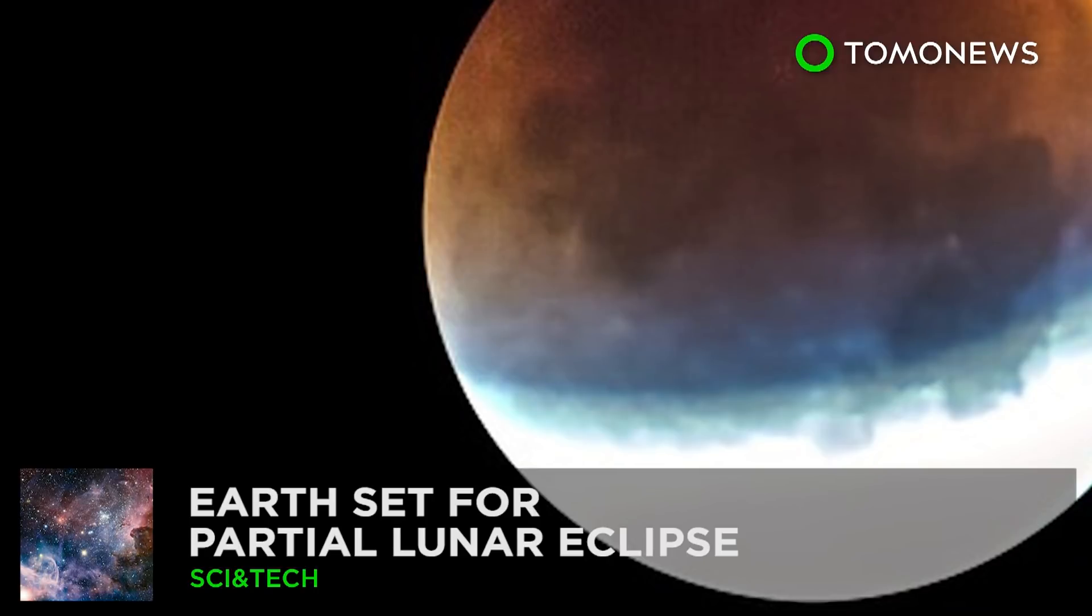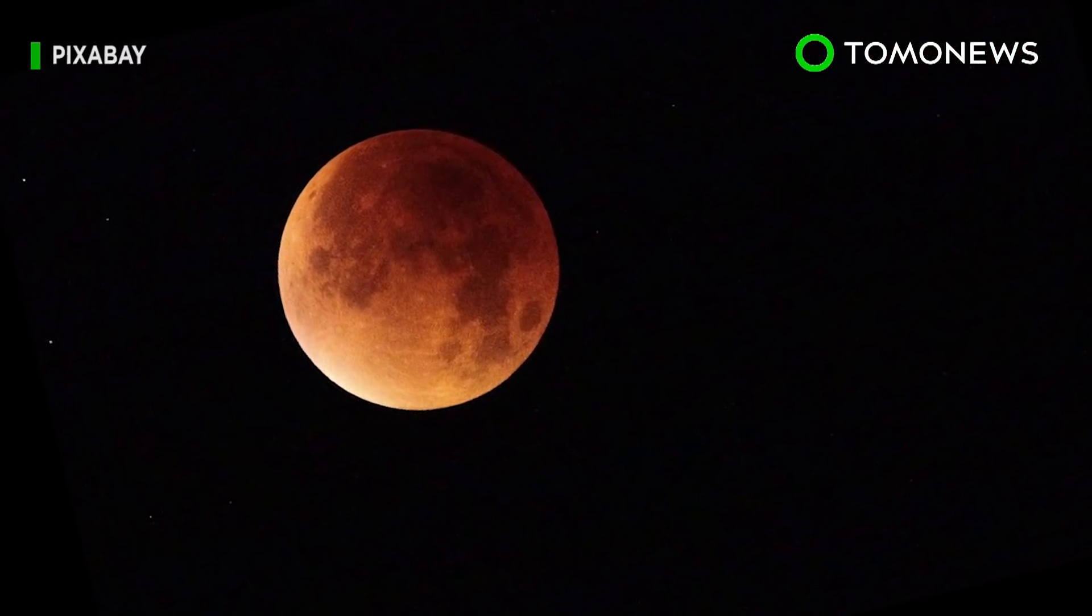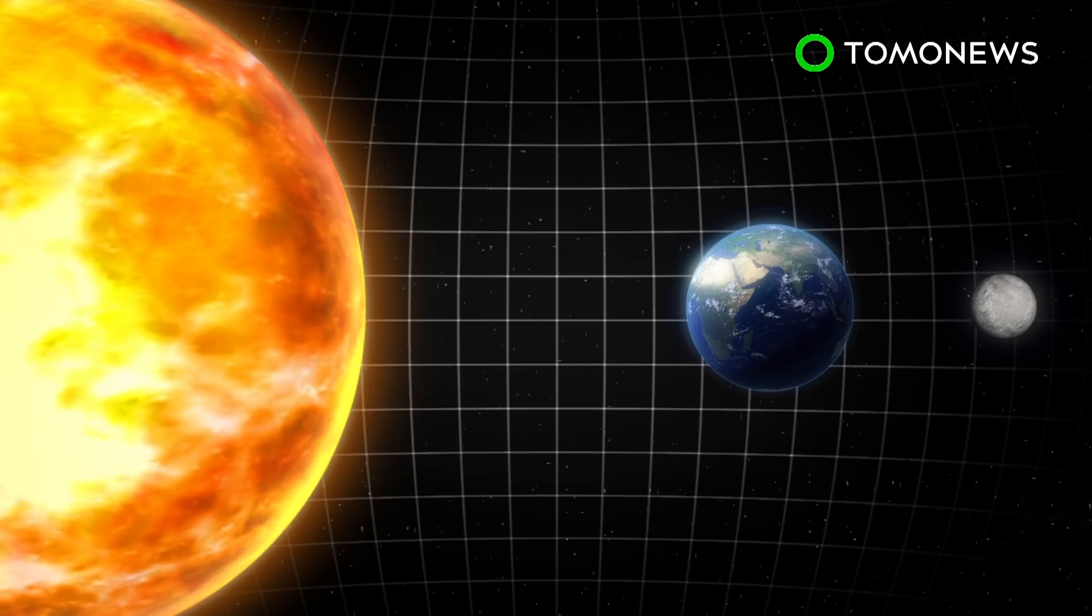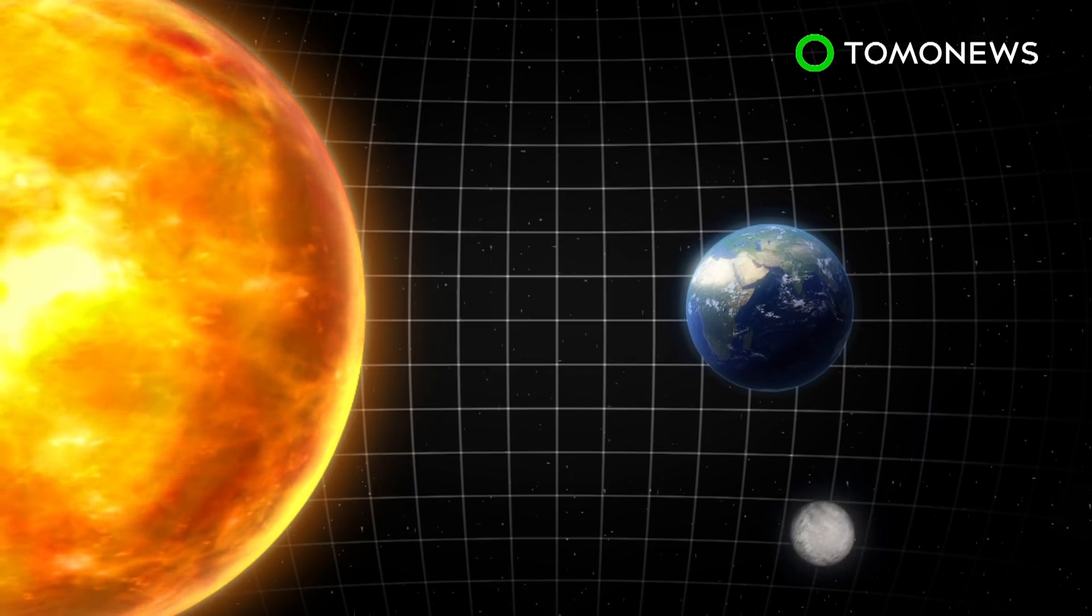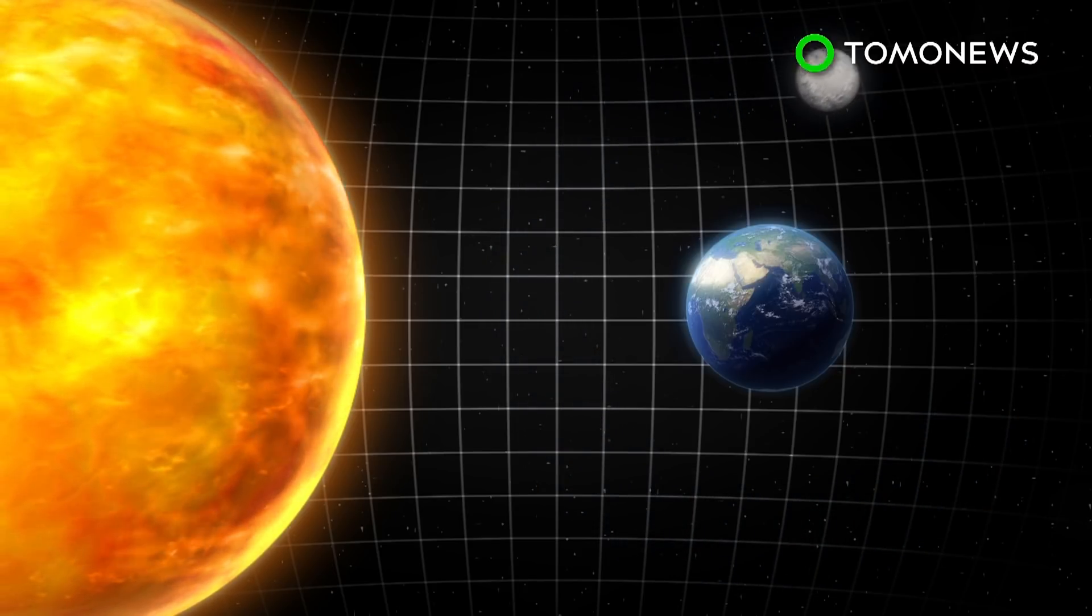Partial lunar eclipse to take place this week. An eclipse is said to take place in the Eastern Hemisphere, but it's nothing like the Great American Eclipse taking place later this month. A partial lunar eclipse occurs when the Earth is between the Sun and the Moon, but not all are perfectly aligned like during a full eclipse.